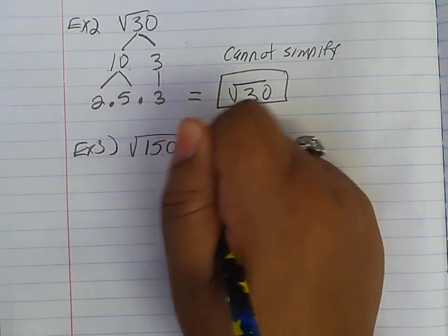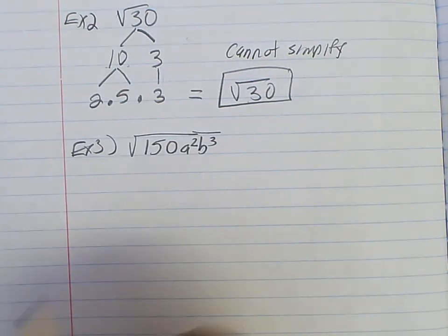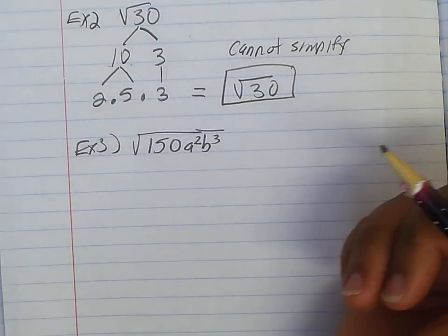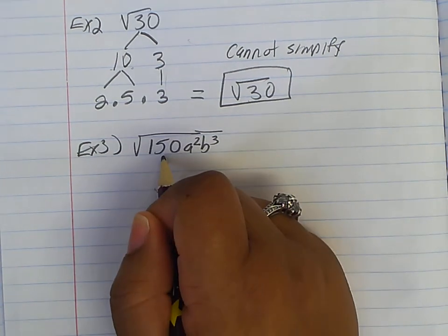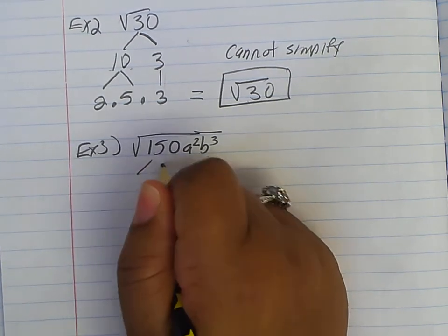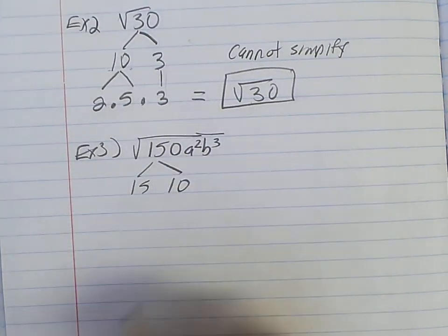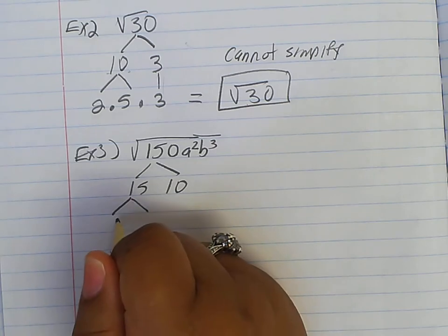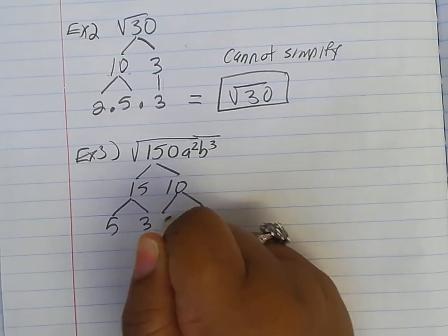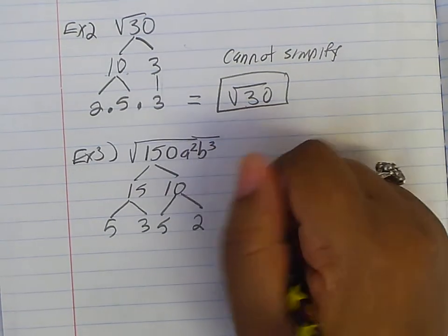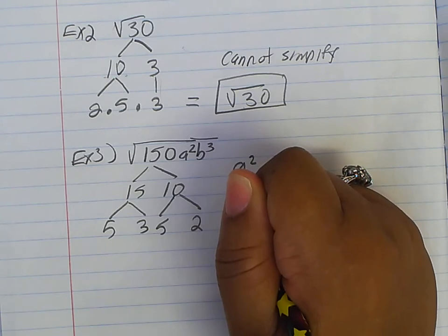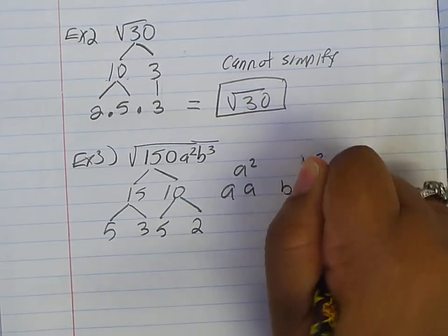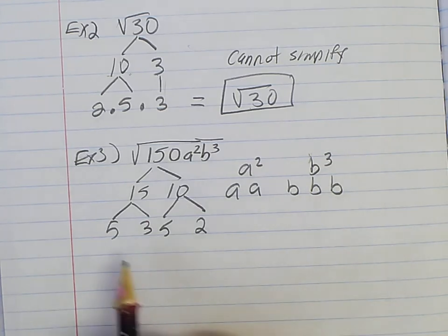Example 3: square root of 150a²b³. Same concept — break it down. For 150, I can do 15 times 10. Then I'll handle the a's and b's separately. Breaking down further: 15 becomes 5 and 3, and 10 becomes 5 and 2. For the a's, I break that down to 2 of them, and for the b's I can break that down to 3 of them.